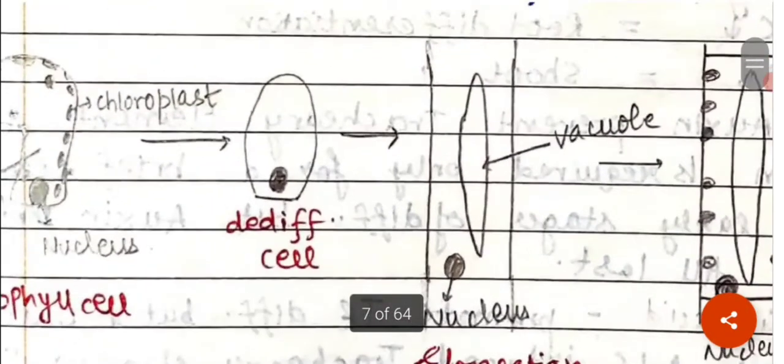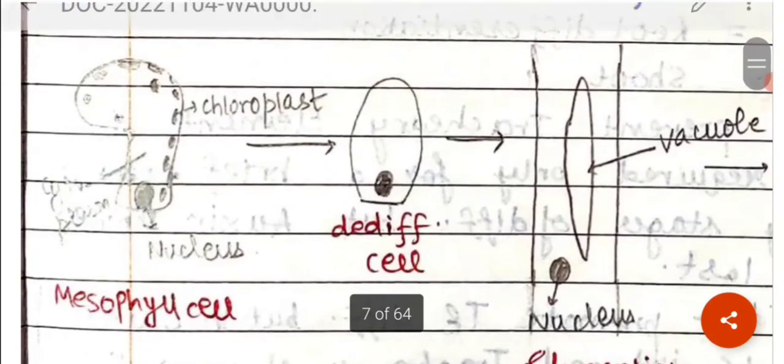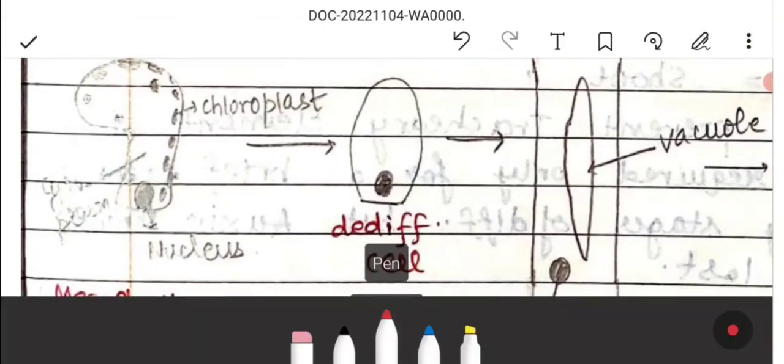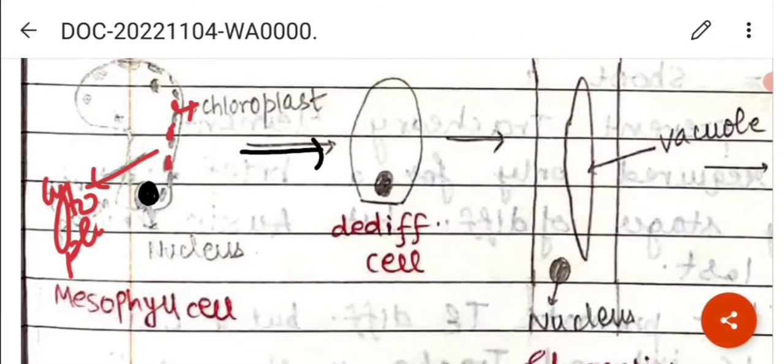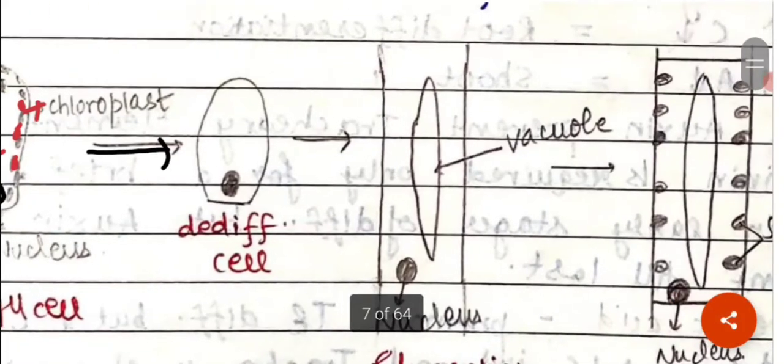This is the mesophyll cell. Here you can see these are the chloroplasts. This is the chloroplast and this is the cytoplasm. And this black one is the nucleus. Now, what happens here? This is the de-differentiated cell.